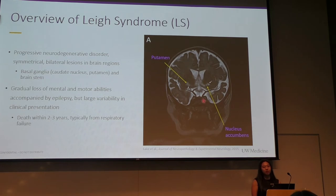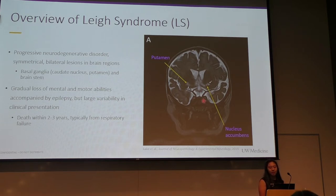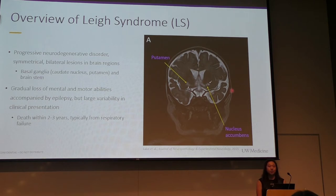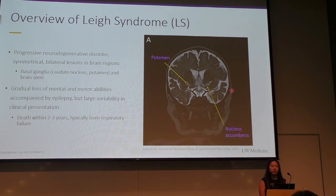Leigh syndrome is a progressive neurodegenerative disorder that causes symmetrical bilateral lesions in various regions of the brain, such as the basal ganglia — both the caudate nucleus and the putamen — and the brainstem. This figure on the right is an MRI scan of a child with Leigh syndrome, and lesions in the putamen and the nucleus accumbens are clearly visible. Leigh syndrome is also characterized by the gradual loss of mental and movement abilities accompanied by epilepsy. While the clinical presentation of Leigh syndrome has large variability, Leigh syndrome normally causes death within two to three years, typically from respiratory failure.